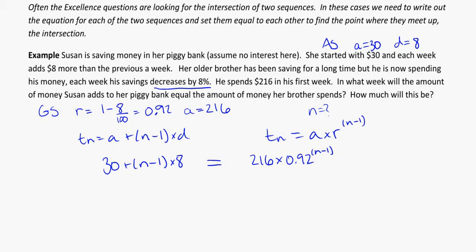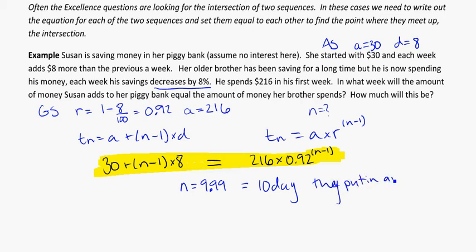You'll plug this directly into solver, just as you see it, watching your brackets, making sure that you get the n minus 1 as a power. When you do this, we should get a value for n that is equal to 9.99 something something. So it's not a precise value, and that's okay, because we're looking at two sequences that overlap, so it might not happen exactly on a set n. But what we're saying here is that these both occur nearly on the 10th day. So we would round to 10 and say, on the 10th day they put in and take out the same amount.